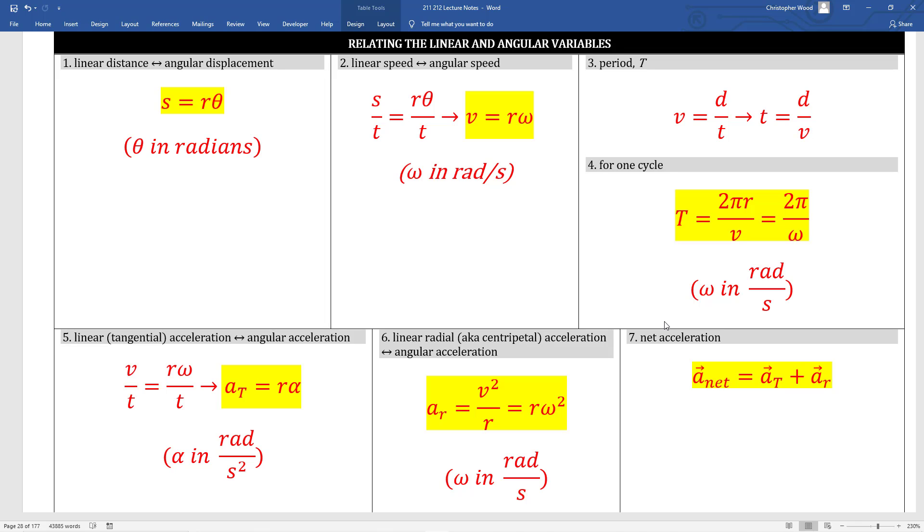Box 4 provides an expression for period in terms of linear velocity, as well as angular velocity, omega. Box 6 provides the expression for centripetal acceleration, which we know and love. You remember, centripetal acceleration equals v squared over r. Here's another equivalent expression.